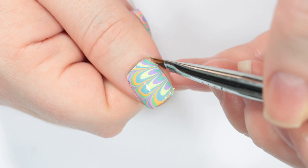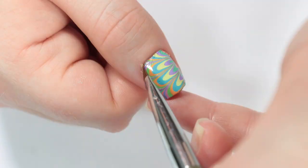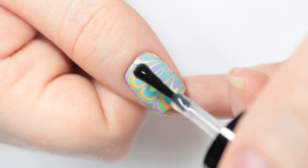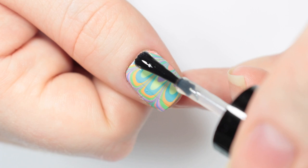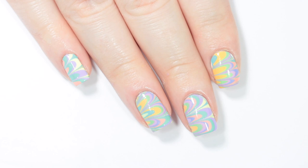So now the marble is stuck on and I'm just taking a small brush dipped in nail polish remover to do any extra cleanup, press down any edges where I need to. And all that's left to do is to seal everything in and smooth out any imperfections with a coat of top coat.